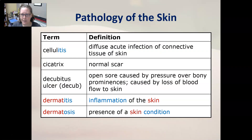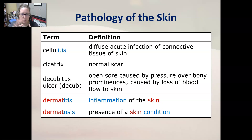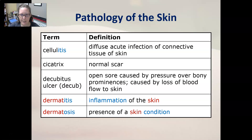Cellulitis is a diffuse acute infection of connective tissue of the skin. It is deeper than a layer of skin, going down deep into sometimes even the muscle, so it's a deep infection of the skin. A cicatrix is a normal scar.